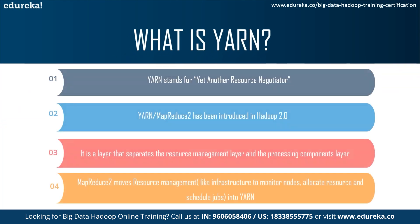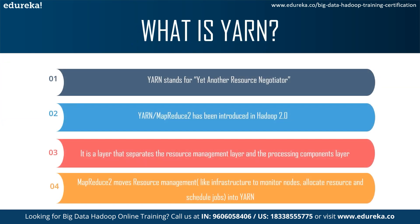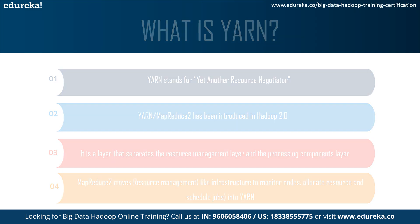YARN stands for Yet Another Resource Negotiator and was introduced in Hadoop 2.0. It is a layer that separates the resource management and processing component layers. MapReduce 2 moves resource management — like monitoring nodes, allocating resources, and scheduling jobs — into YARN. MapReduce version 2 is simply the re-implementation of the classical MapReduce engine, with YARN taking over the function of resource management.